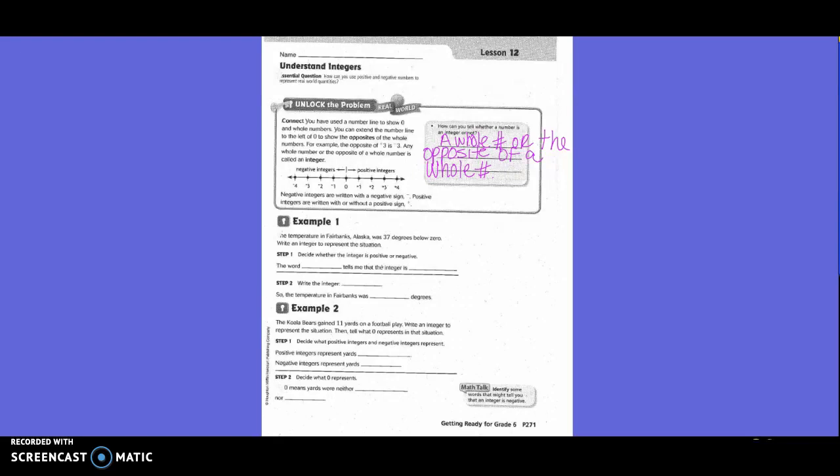The word below tells me this integer is negative. Write the integer. We said it's going to be negative and our number is 37. So the temperature in Fairbanks was negative 37 degrees.